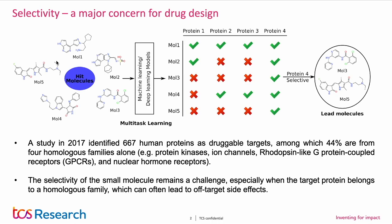Now let's look at this toy example for understanding selectivity. Here, even though these five molecules were found to inhibit protein 4 during experiments, only molecule 3 and molecule 5 were found to be selective against only protein 4. The remaining three molecules — molecule 1, molecule 2, and molecule 4 — were having off-target side effects.